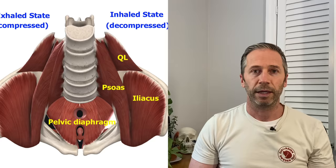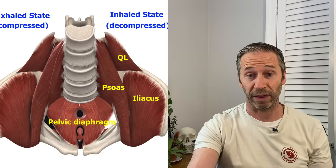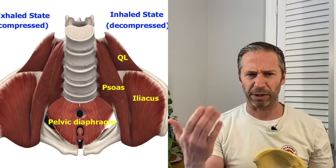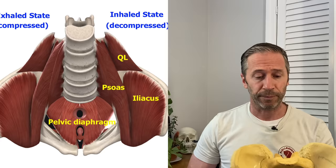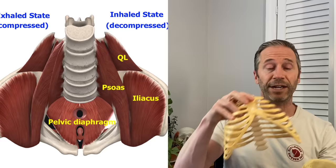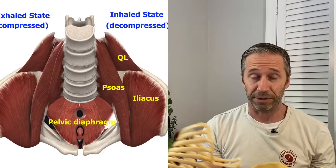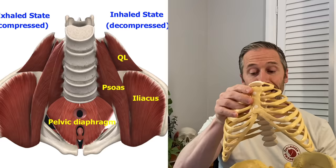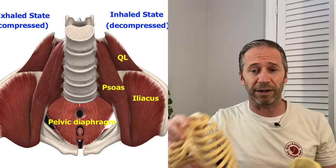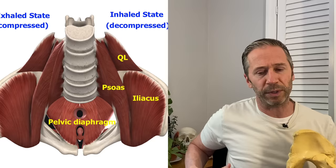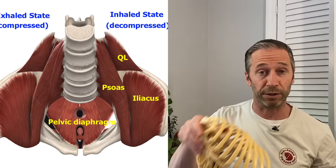Going back to the previous diagram: the left side is labeled 'inhaled state decompressed' and the right side 'exhaled state compressed.' In the left AIC pattern, when the pelvis comes forward on the left and back on the right, orienting the pelvis and lumbar spine to the right, that shifts body weight to the right and brings the rib cage down on the right. This is what Posture Restoration calls the left AIC right BC pattern. In this position, the right abdominal wall and right intercostals are in a state of compression — a state of exhalation — while everything on the left side is pulled apart and forward into a state of extension and inhalation.